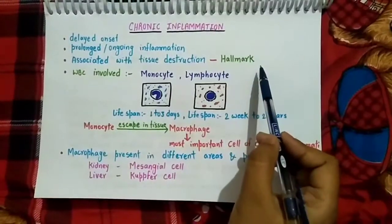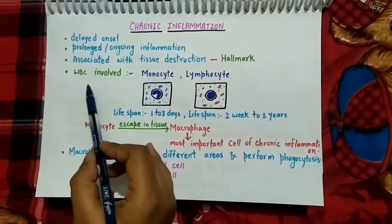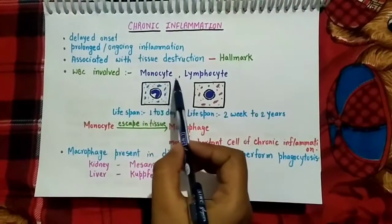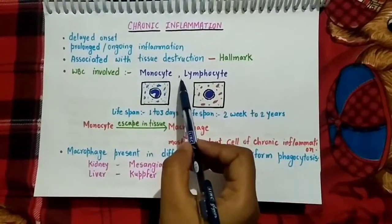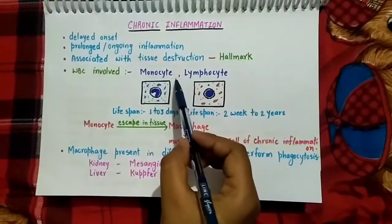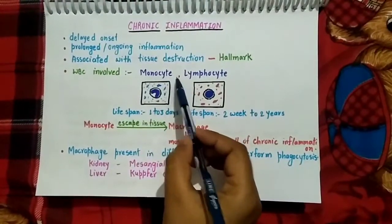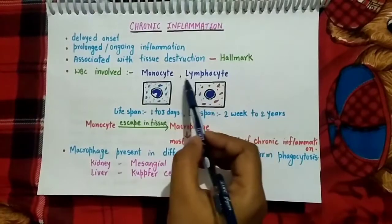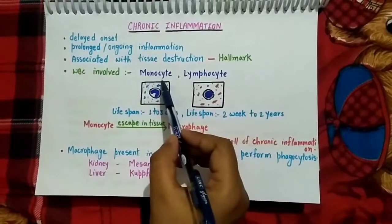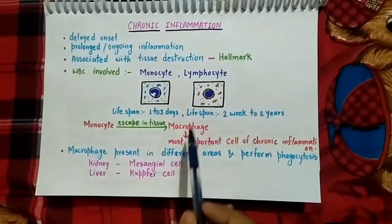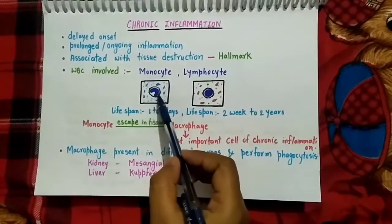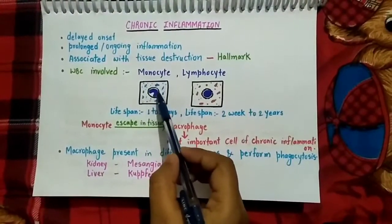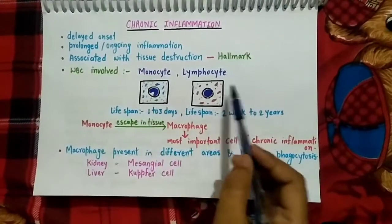Chronic inflammation is usually associated with tissue destruction, which is the hallmark of chronic inflammation. There are mainly two types of WBC cells involved in chronic inflammation: the first one is monocyte and the second one is lymphocyte.